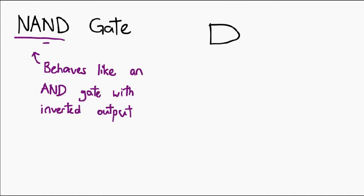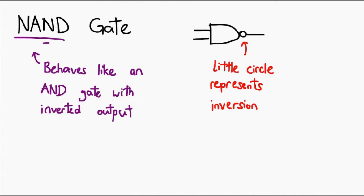The symbol actually looks like this. Note that it looks exactly like the AND gate symbol, with the exception of this little circle at the end. This circle actually represents an inversion. At any point in the future, when you see any form of diagram that has this little circle, it means you take the expected output and invert it. This should give you an intuitive explanation of why the AND gate and NAND gate symbols look so similar with that tiny little difference.